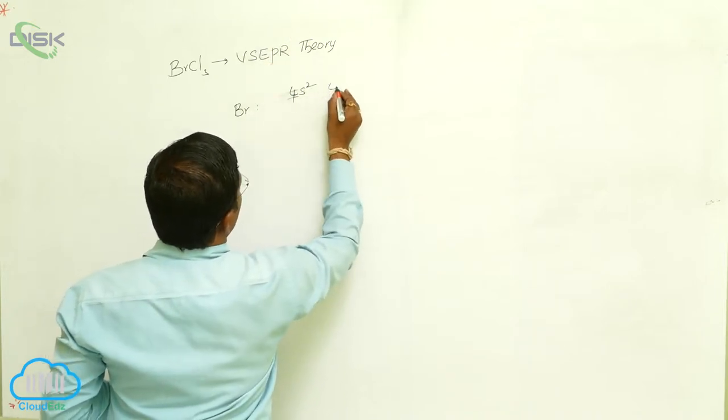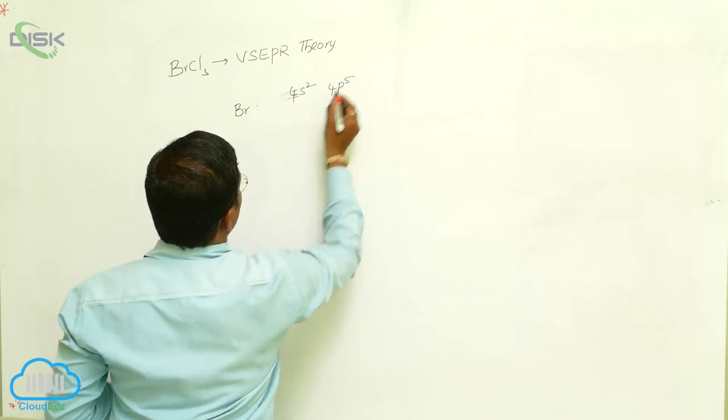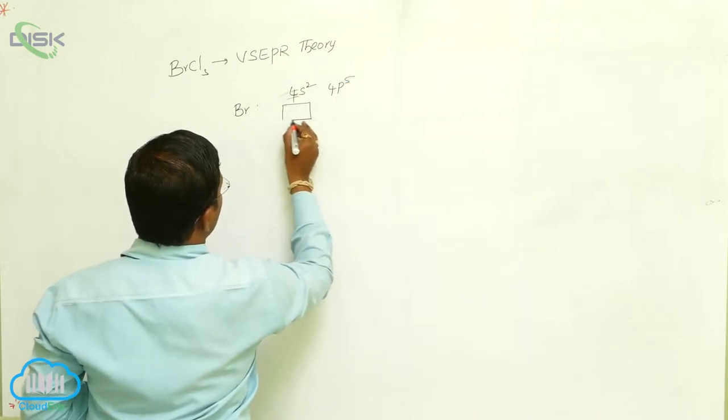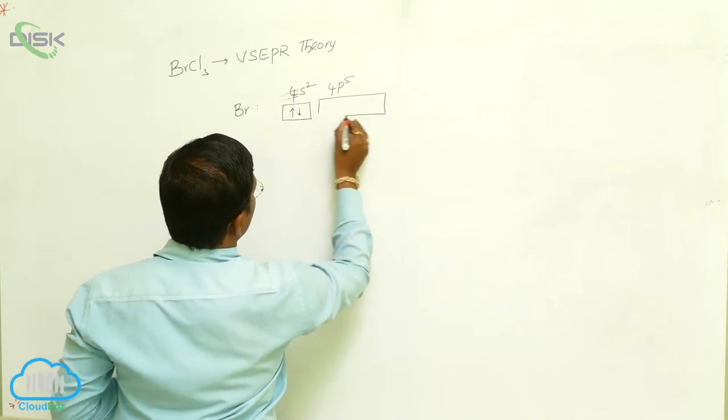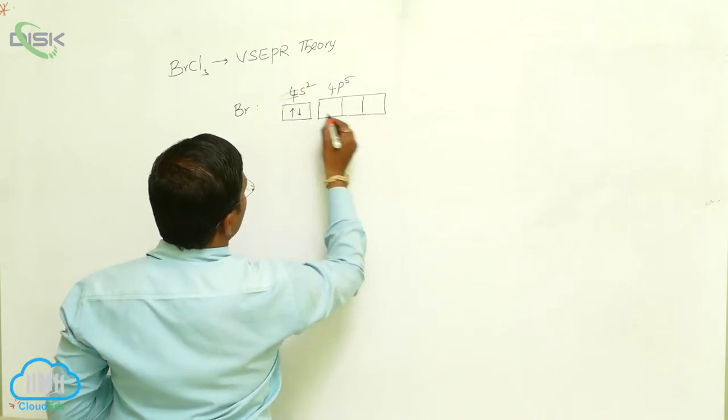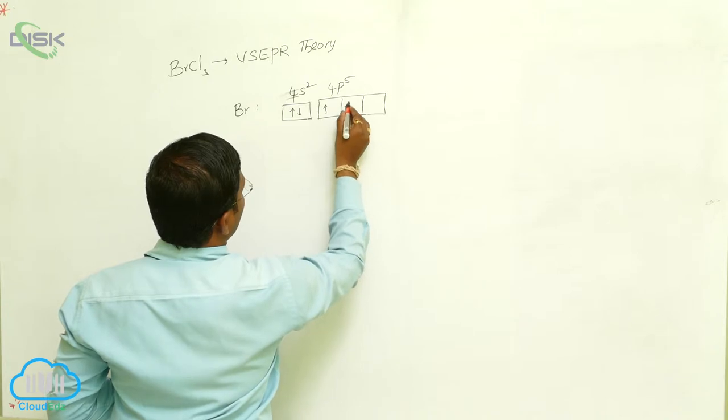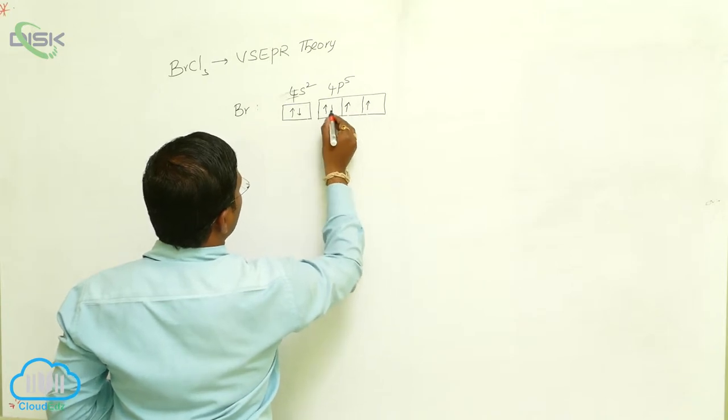We can represent it as px¹, py¹, pz¹, with additional electrons in px and py.